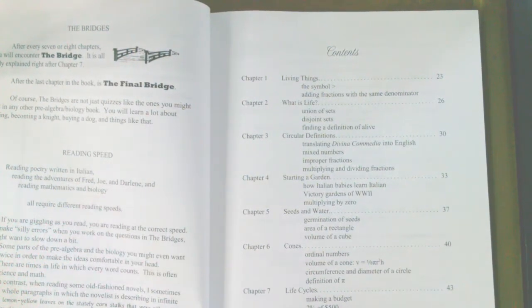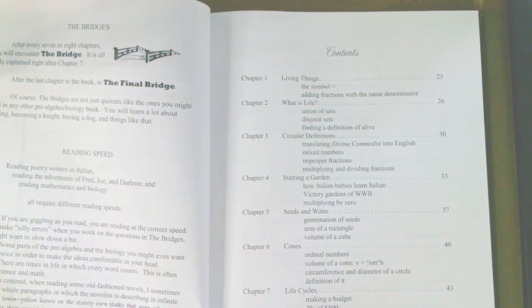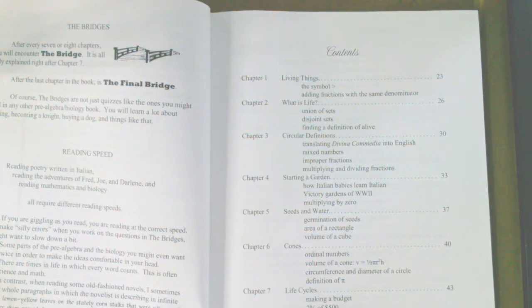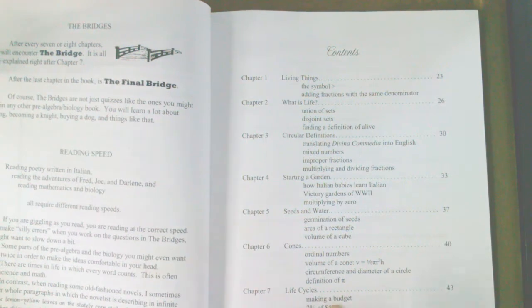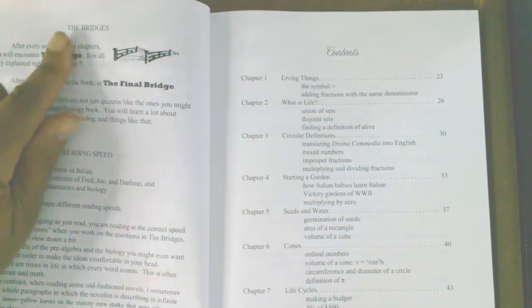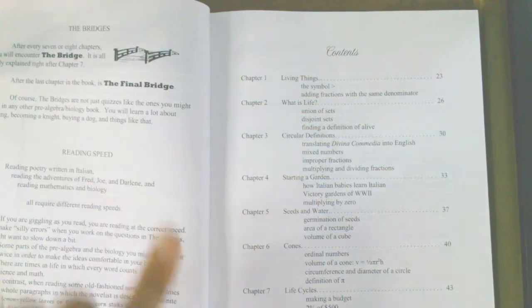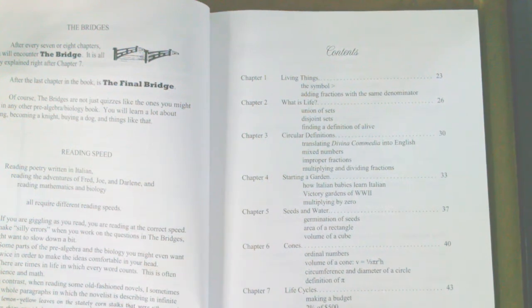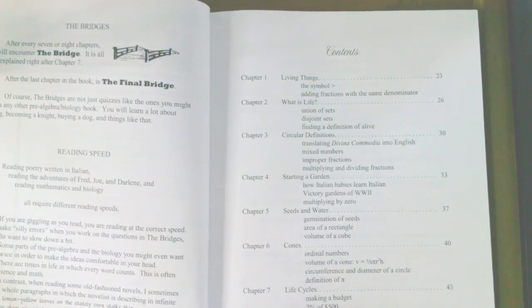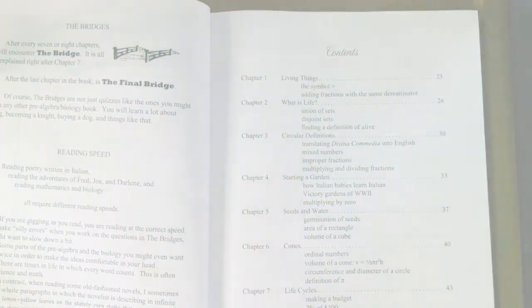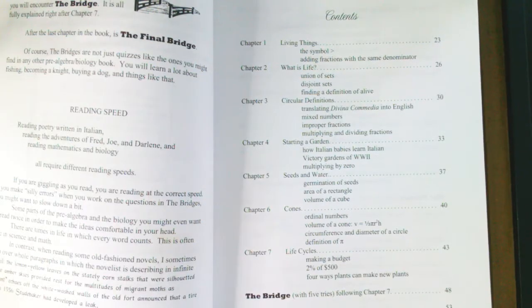Now in the book, in the elementary series, there is a 'Your Turn to Play,' but in the intermediate series starting with this book, there are also what he called the Bridges. The Bridges are like quizzes or tests, and your student gets five chances to pass or cross the bridge.